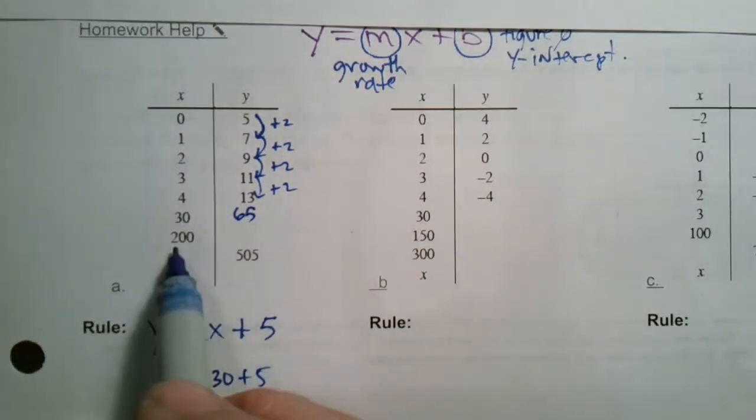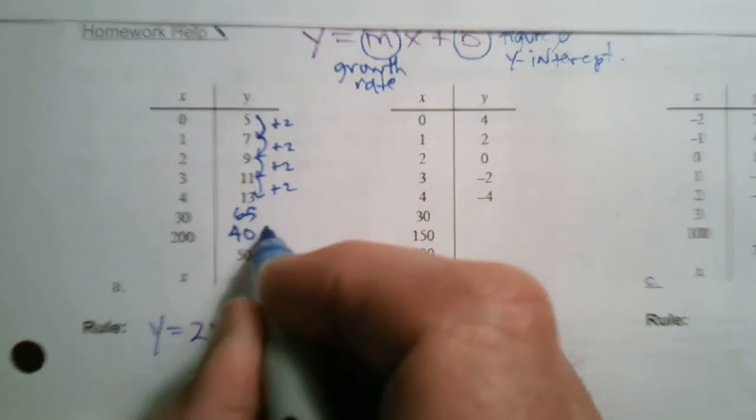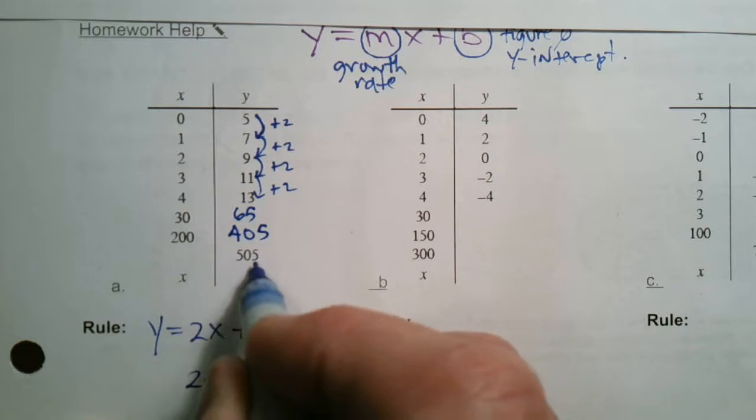Do the same thing for 200. 2 times 200 is 400 plus 5, 405. It goes there. And now I've got this 205.